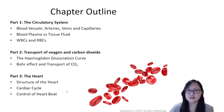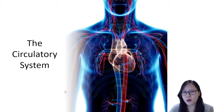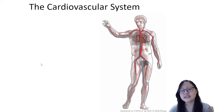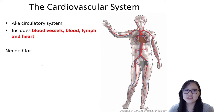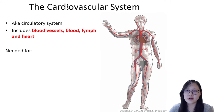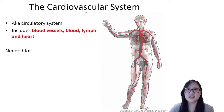Let's start with blood vessels today. But before we go into blood vessels, let's talk a little bit about what the circulatory system is. The circulatory system is a system that involves blood vessels, blood, lymph, and the heart. It's also called the cardiovascular system — 'cardio' refers to the heart, and 'vascular' refers to the vessels.